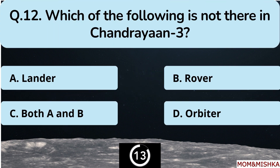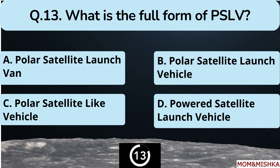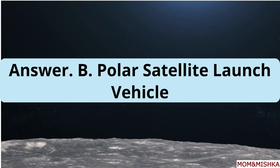Which of the following is not there in Chandrayaan-3? It's the Orbiter, option D. What is the full form of PSLV? The answer is option B: Polar Satellite Launch Vehicle.